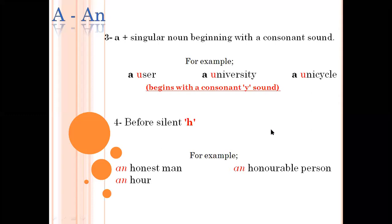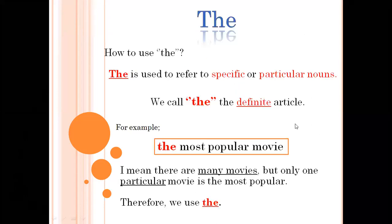Before silent H, we also use an with the words where H is silent. An honest man. An honorable person. OK, let's see where we use the.